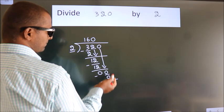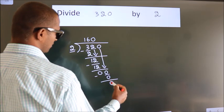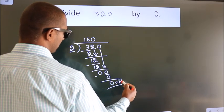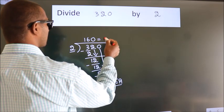No more numbers to bring it down. So, we stop here. This is our remainder. This is our quotient.